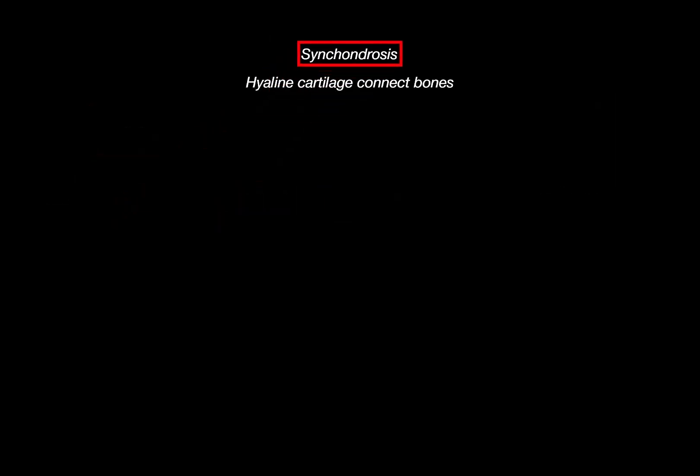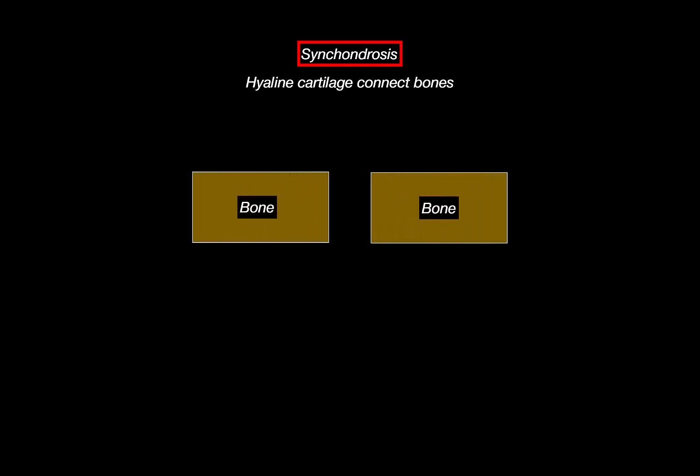Let's start with synchondrosis. Synchondroses are joints where bones are joined by hyaline cartilage — one bone, another bone, with hyaline cartilage connecting them. They are firm, immovable, and typically found at the base of the skull, especially during development.